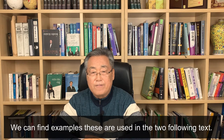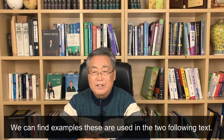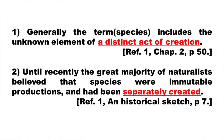We can find examples of these terms used in two following texts. The first one: generally the term species included the unknown element of a distinct act of creation. The second: until recently the great majority of naturalists believed that species were immutable productions and had been separately created.